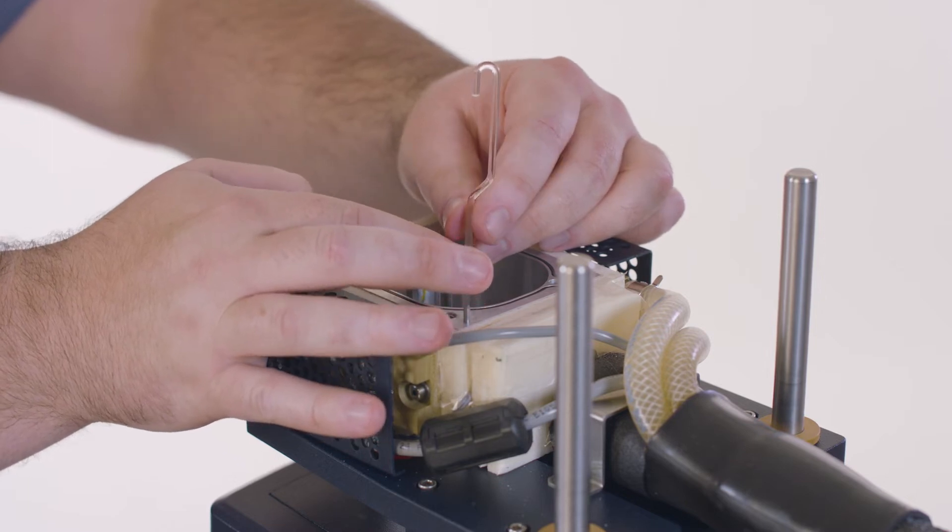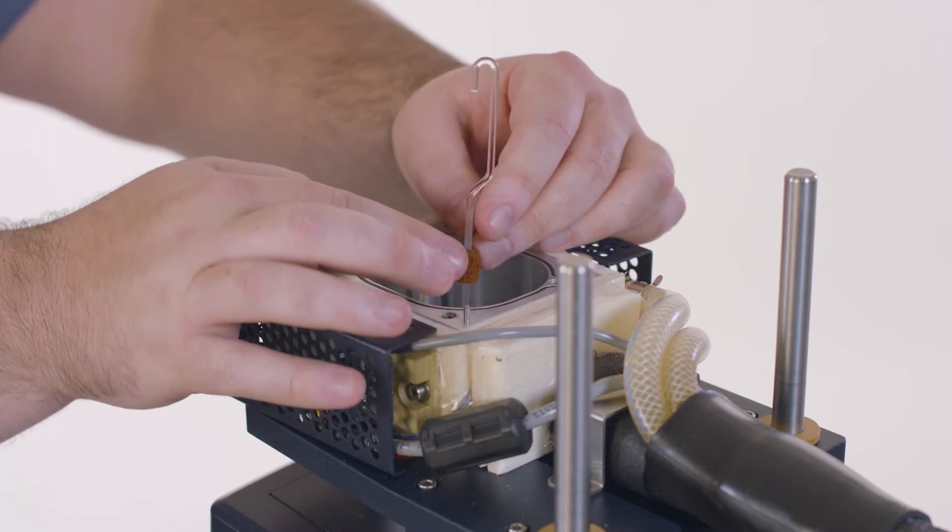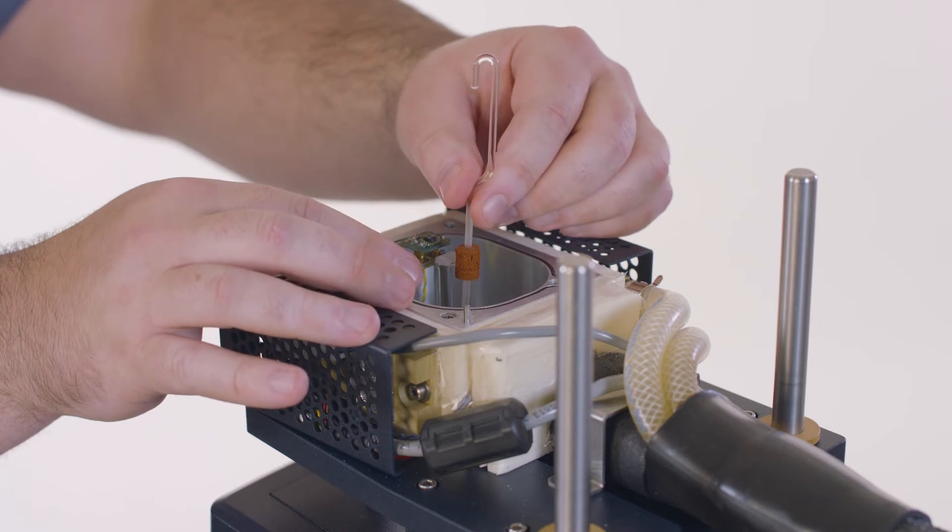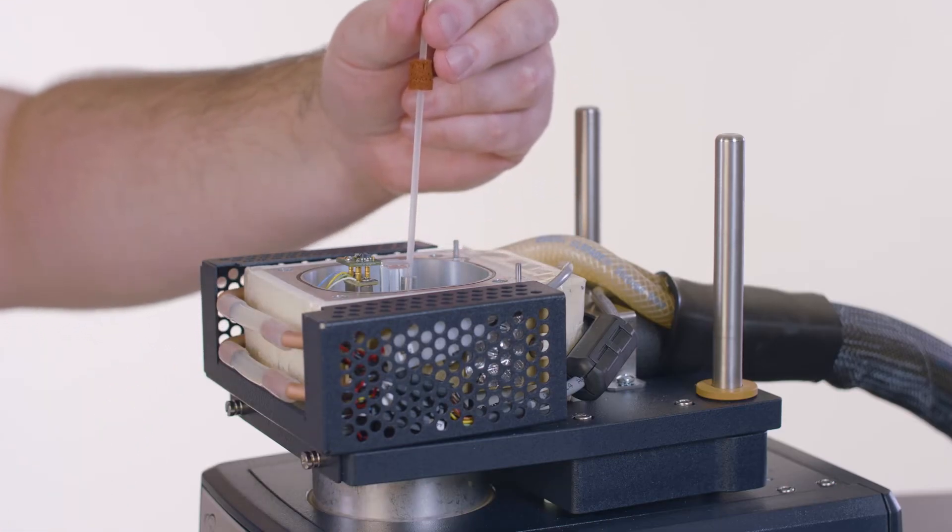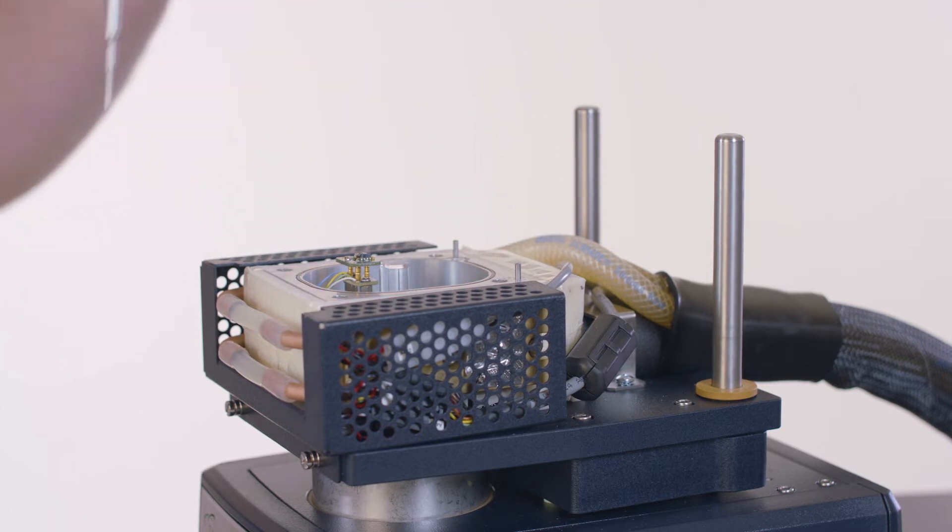Since we are changing the sample stage, we will need to remove the bottom of the humidity sample chamber. This would not be necessary if we were switching to a probe compatible with this stage, such as the penetration or macro expansion probes.